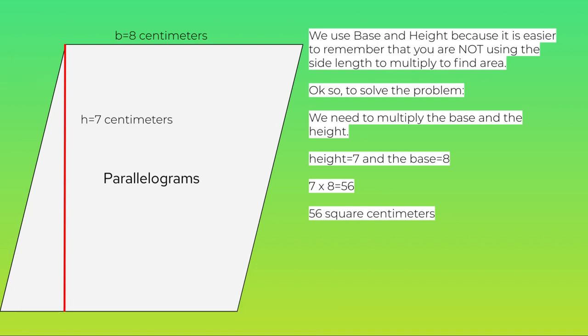We use base and height because it is easier to remember that you are not using this side length right here to multiply to find area. Okay, so let's solve the problem. We need to multiply the base and the height. The height is equal to 7 centimeters and the base is equal to 8 centimeters. 7 multiplied by 8 is 56. So our answer is 56 square centimeters.